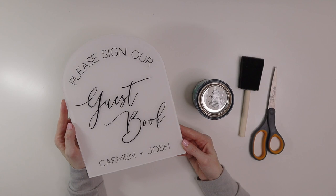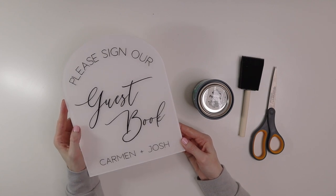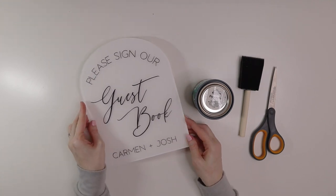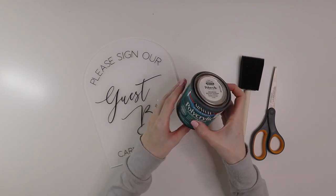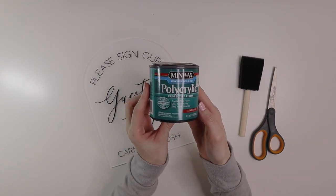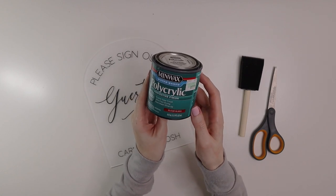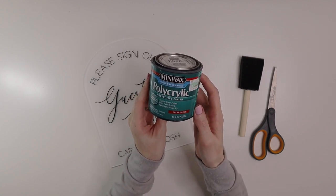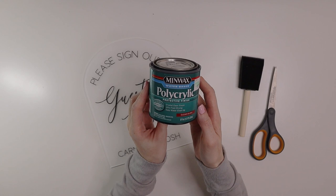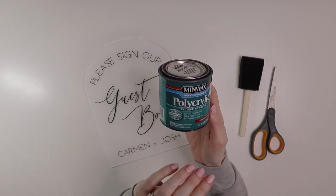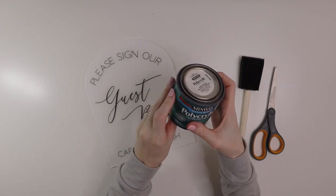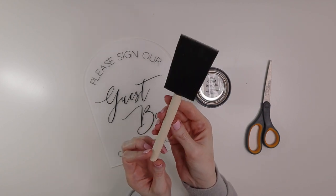All right, you guys, it is now the next day. I let the sign dry overnight and now we're going to go ahead and paint the polycrylic clear coat. This is going to help to seal the back of the sign, especially if your wedding is going to be outdoors. You definitely want to seal the back in case it does get wet at all, that way the paint would not chip off or drip off or anything like that. To apply the polycrylic, we're going to use a foam brush. We're just going to paint one generous coat of this on the back of the sign.